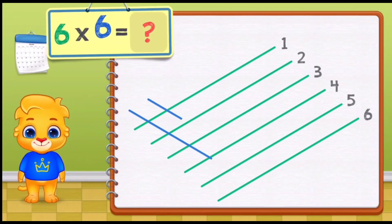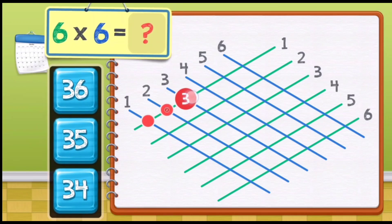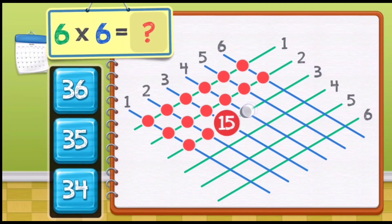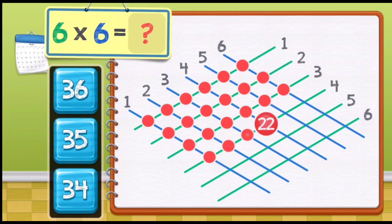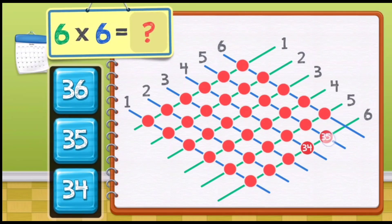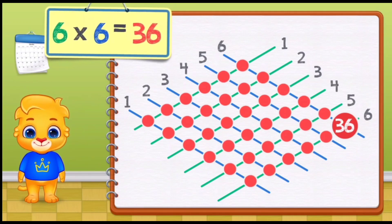Six times six equals: 1, 2, 3, 4, 5, 6, 7, 8, 9, 10, 11, 12, 13, 14, 15, 16, 17, 18, 19, 20, 21, 22, 23, 24, 25, 26, 27, 28, 29, 31, 32, 33, 34, 35, 36. Six times six equals 36.